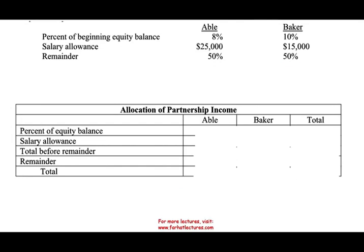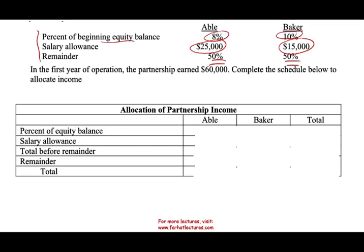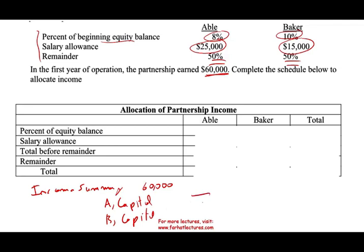Now let's look at income allocation. They agreed that Abel gets 8% of beginning capital of 85,000, Baker gets 10%. Then Abel gets a $25,000 salary allowance and Baker gets a $15,000 salary allowance. Anything left is distributed 50-50. In the first year of operation, the partnership made $60,000. We need to debit income summary and credit A capital and B capital, totaling 60,000.